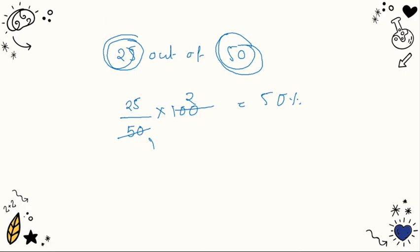In a class of 50 students, 15 had at least one pet. What percent is that? So out of 50 students, 15 have a pet. To find the percentage, multiply by 100.